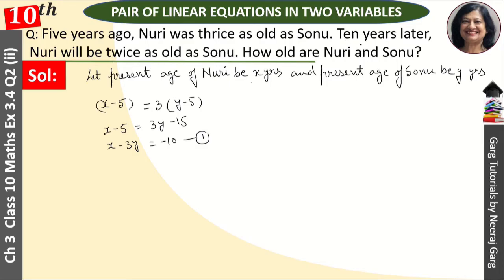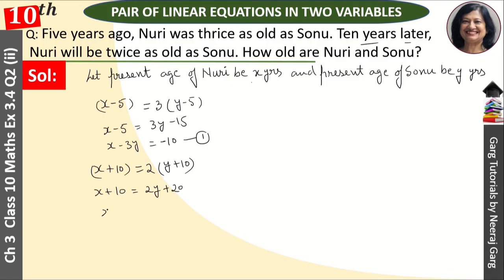For the second equation: 10 years later, Nuri will be twice as old as Sonu. So X plus 10 equals 2 times (Y plus 10), which gives X plus 10 equals 2Y plus 20, and simplifying: X minus 2Y equals 10. This is our second equation.